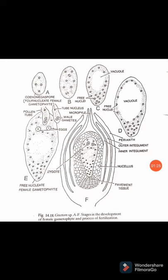Since there are no archegonia in the case of Netum, the egg cells remain freely suspended in the upper free nuclear portion of the gametophyte. Unlike Cycas and Pinus, where the female gametophyte has archegonia containing the egg nucleus, in Netum there are no archegonia — this is an important difference to remember.